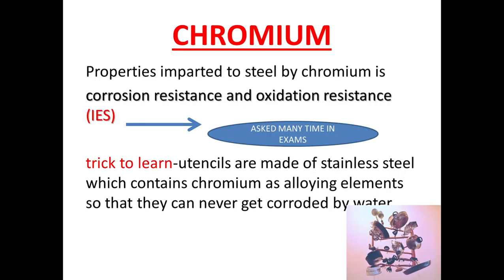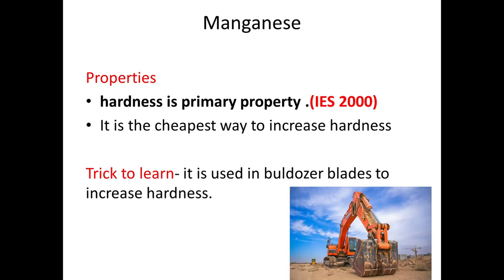The second element is chromium. Chromium provides corrosion resistance or oxidation resistance. We know that household utensils are made of stainless steel, which contains chromium as the major alloying element that provides corrosion resistance.